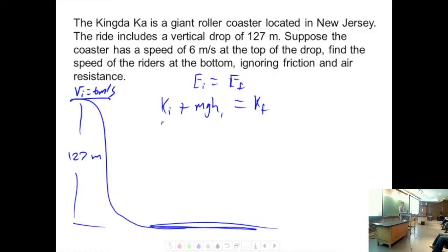Now we plug them in. 1 half M V initial squared plus M G H equals 1 half M V final squared. M goes away as usual for us through the algebra. V final is going to be V initial squared plus 2 G H, all square root.